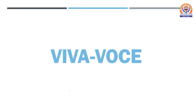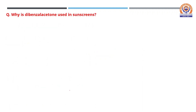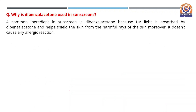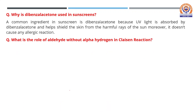Some viva questions related to this synthesis: Why is dibenzyl acetone used in sunscreens? It is a common ingredient in sunscreens because UV light is absorbed by dibenzyl acetone and helps shield the skin from the harmful rays of the sun. Moreover, it does not cause any allergic reaction.